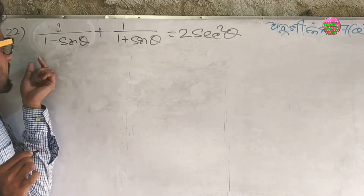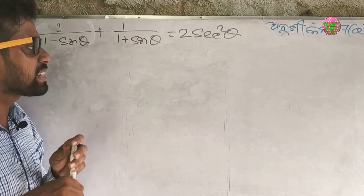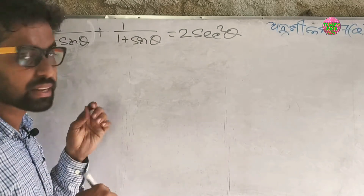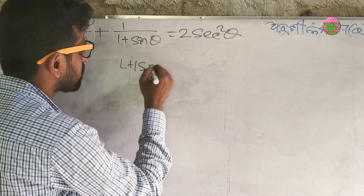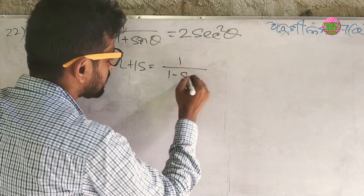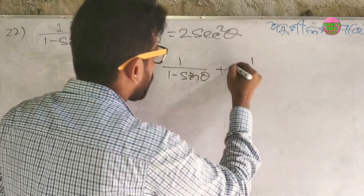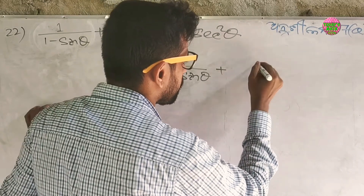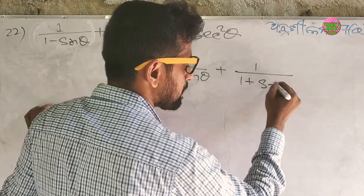The next question is: 1 by (1 minus sin theta) plus 1 by (1 plus sin theta) equals 2 sec squared theta. I am going to show you the LHS. LHS is 1 by (1 minus sin theta) plus 1 by (1 plus sin theta).